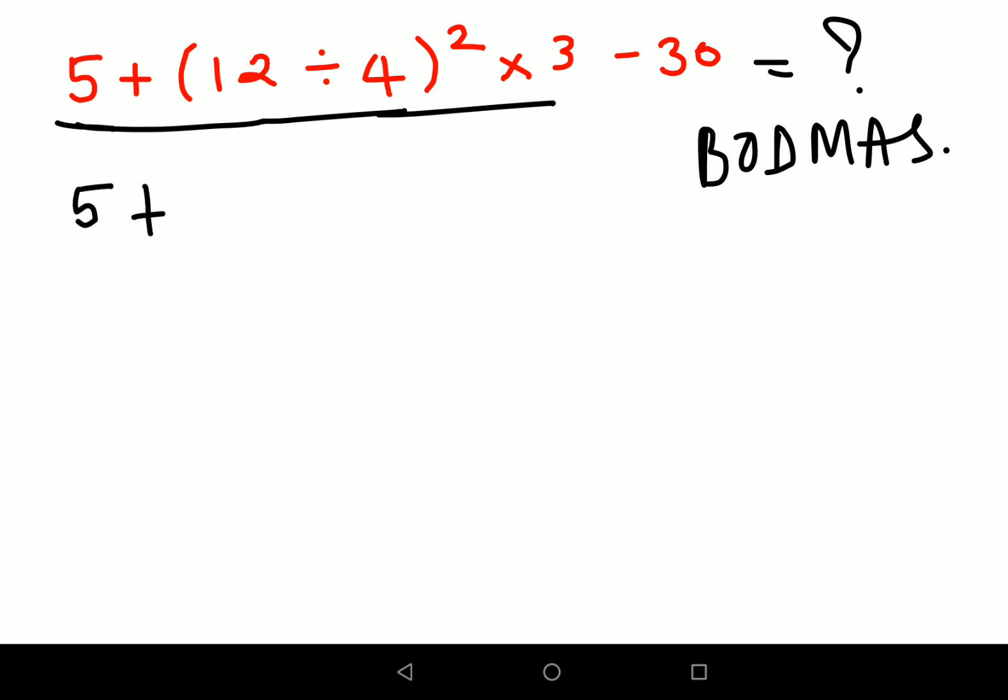So 12 divided by 4, we know that equals 3, so the terms cancel out. So we will do 3 square into 3 minus 30.